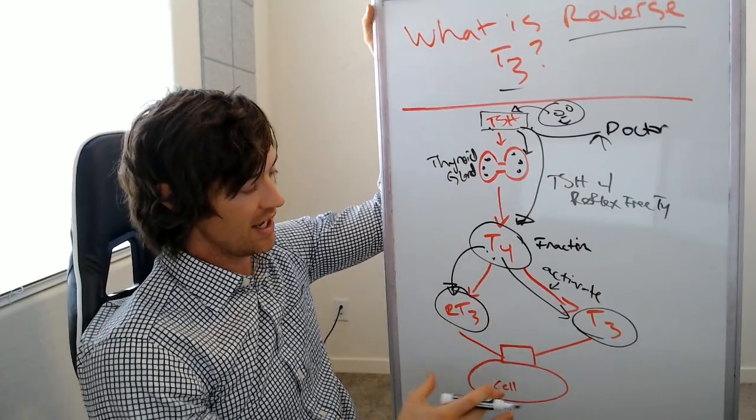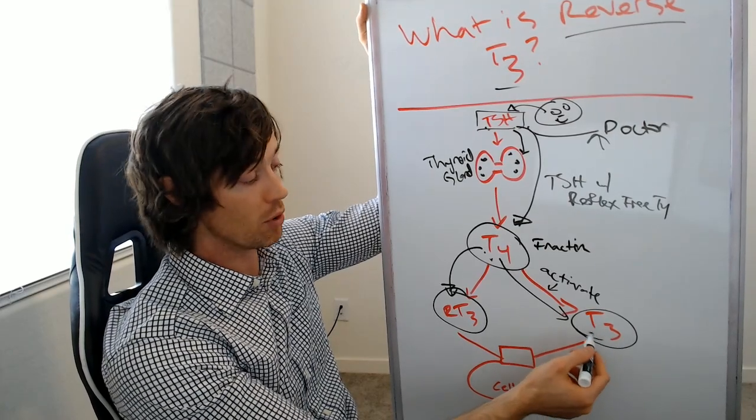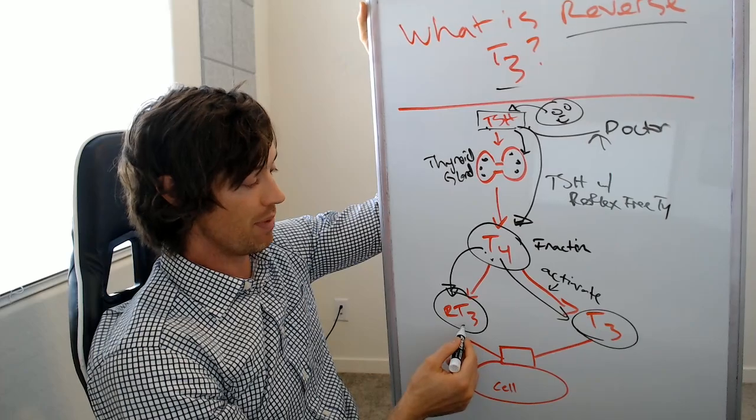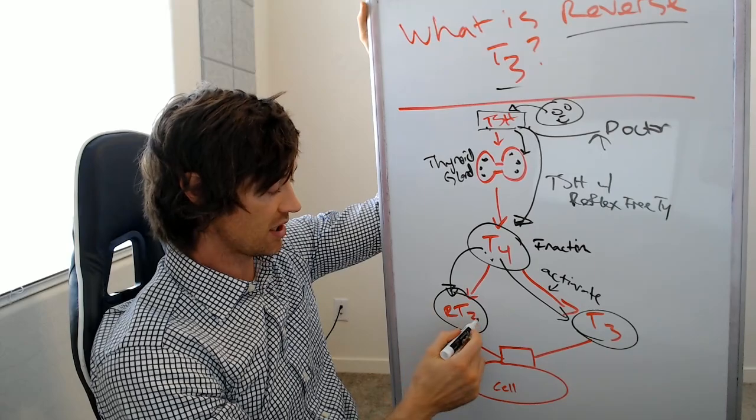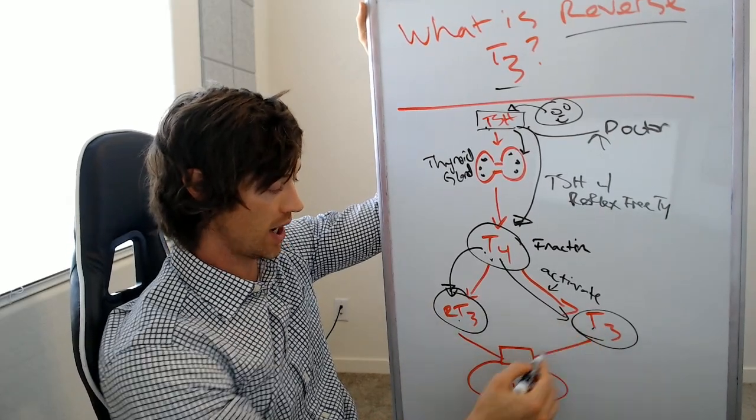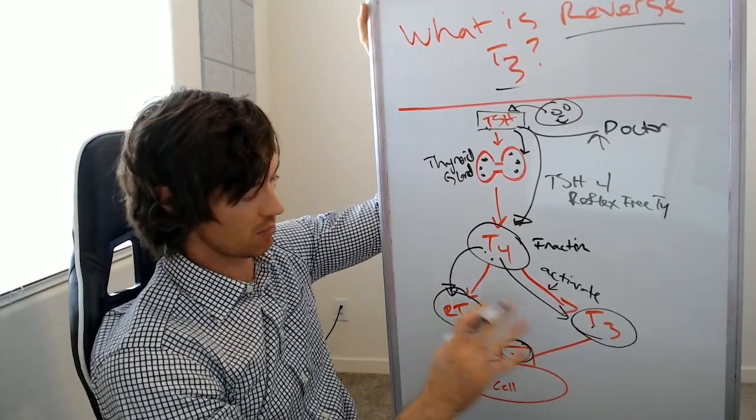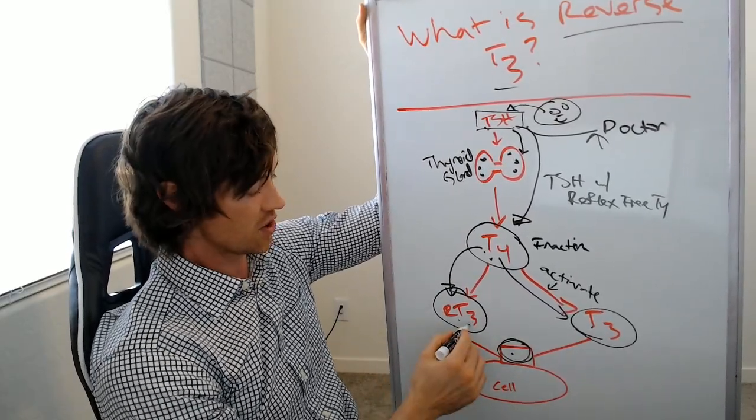Now, what you have to understand is that where T3 is the most important lab test or most important thyroid hormone available in your body, reverse T3 is basically the polar opposite and the antithesis to T3. Basically what happens is reverse T3 and T3 compete for binding on the cell. Well, it's actually inside the cell, but for the purposes of this illustration, it'll make sense. So they are competing for this.